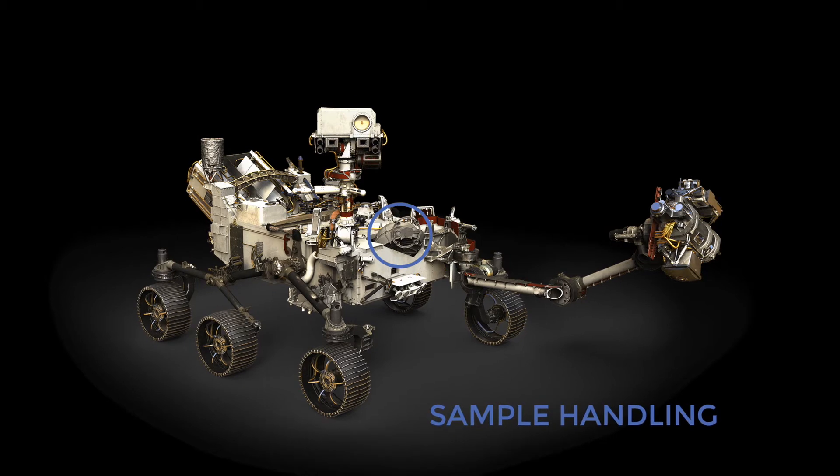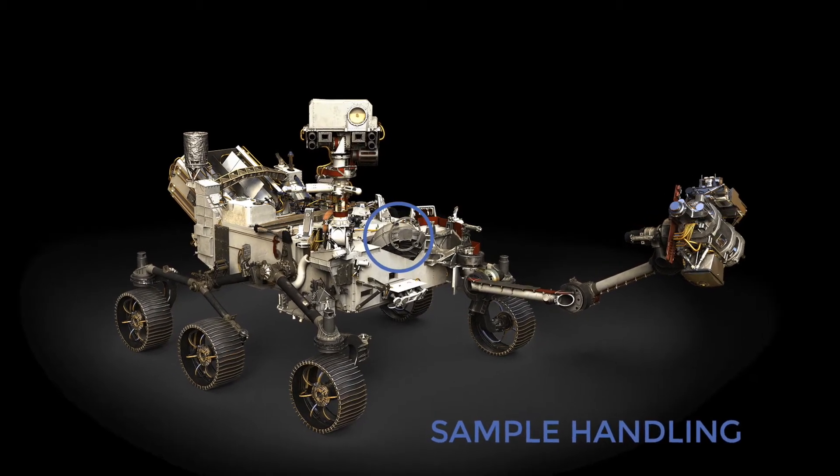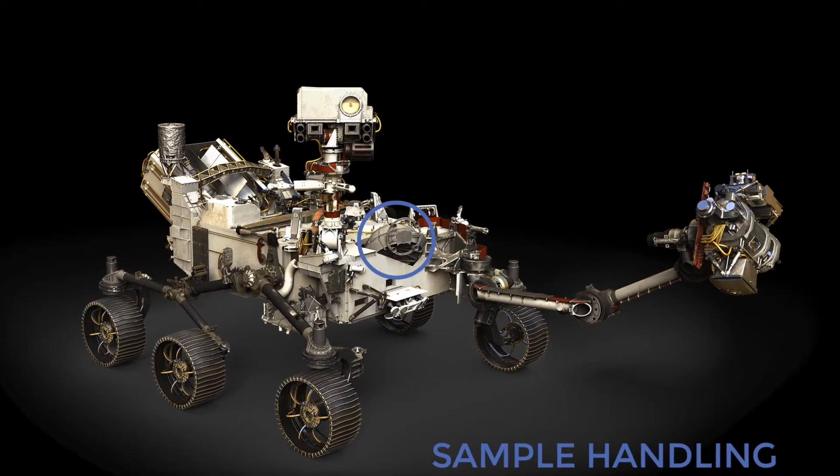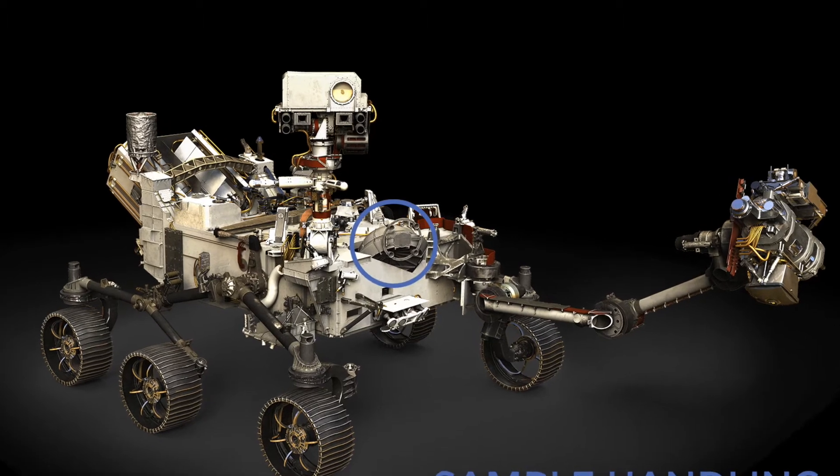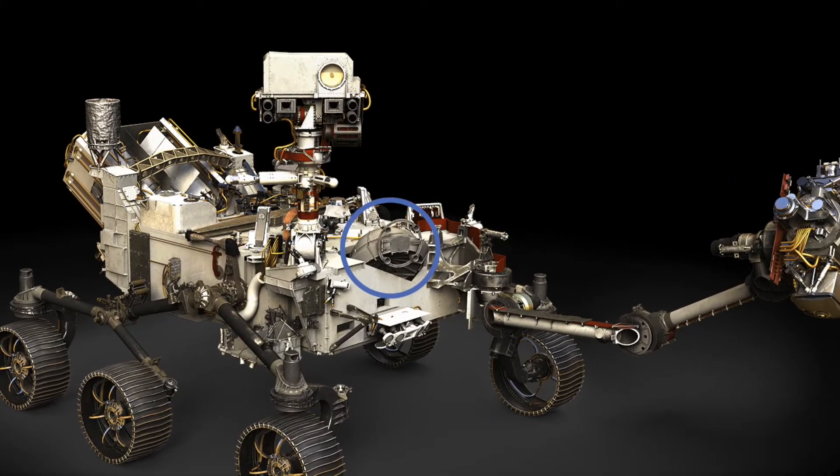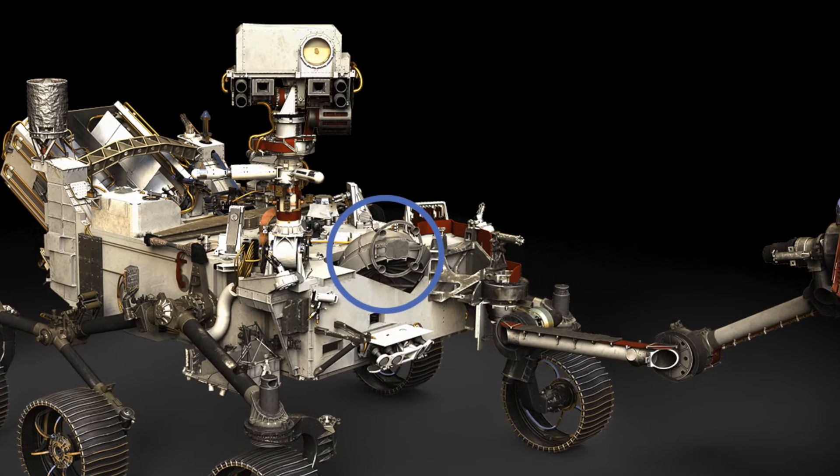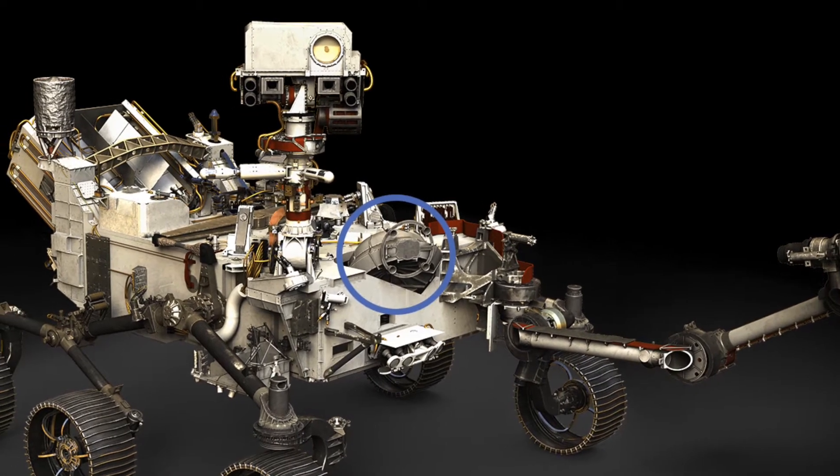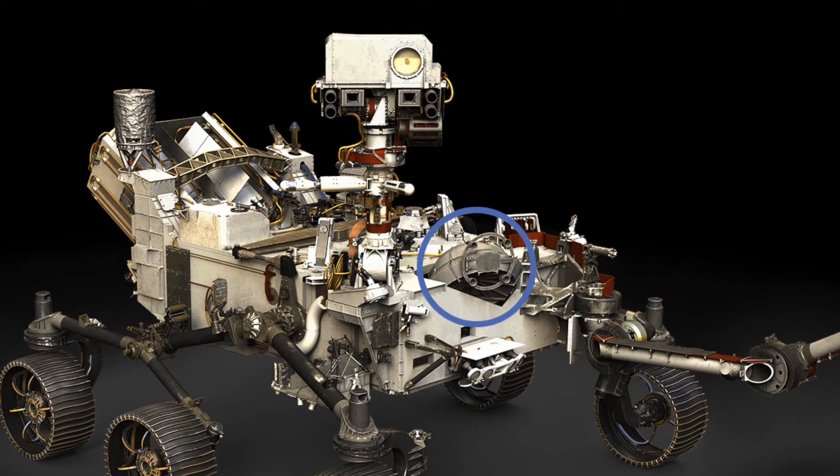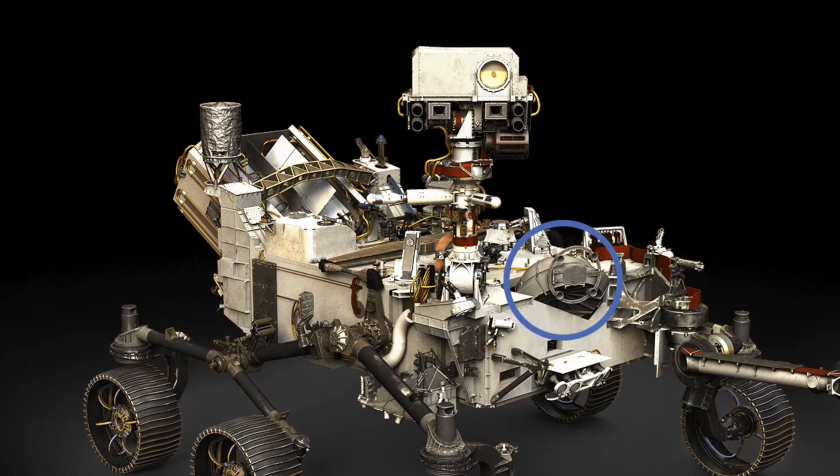This is the Mars rover Perseverance. It's travelling 480 million kilometres from the Earth to Mars. It's one tough rover and we can learn a lot by having a closer look. One of its many jobs is to collect Martian soil and store it in its belly. Check out the NASA website in the link below.